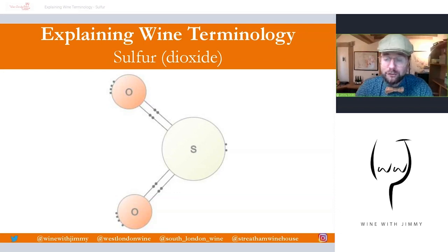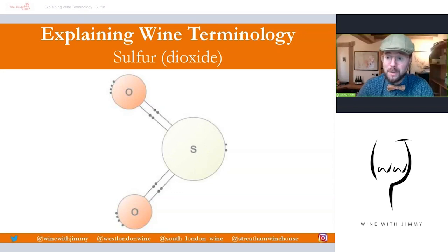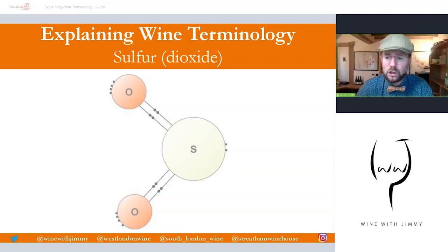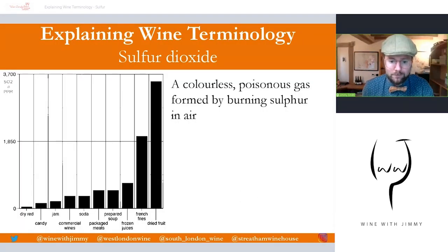On this video, you may have seen on a label 'contains sulfites,' so we're going to talk about the world of sulfur used in winemaking. This is basically the world of sulfur dioxide and how it relates to the sulfite found on the label, because it can be a little bit misleading. There seem to be no other ingredients listed on most bottles of wine apart from 'sulfite,' and it doesn't even say it contains grapes on many labels.